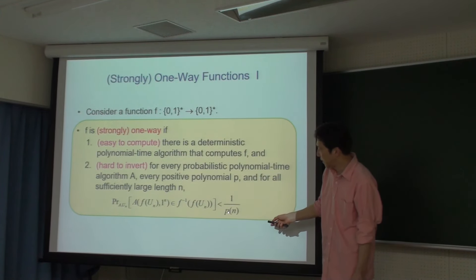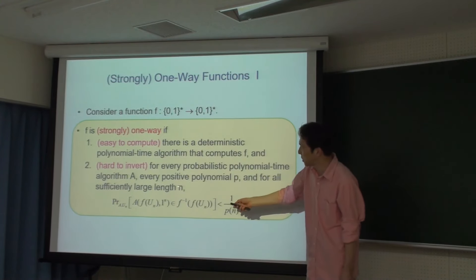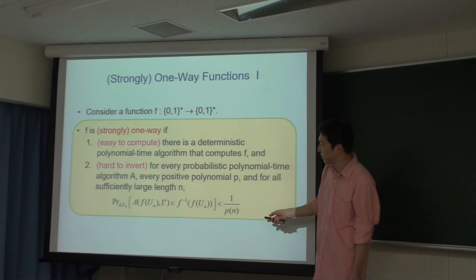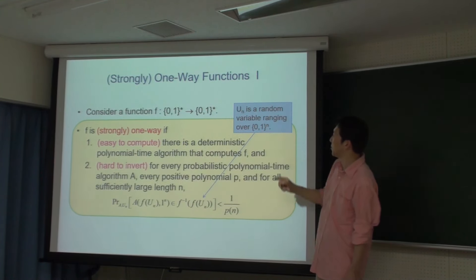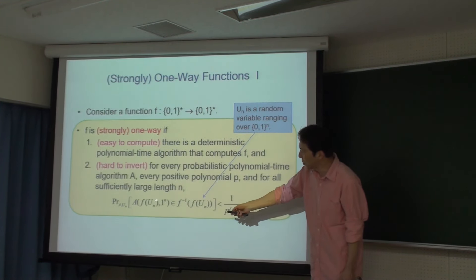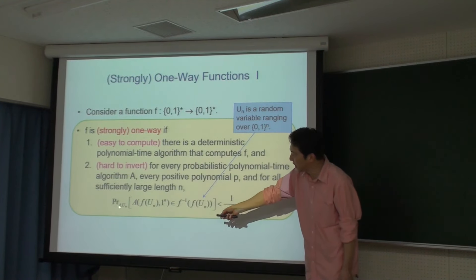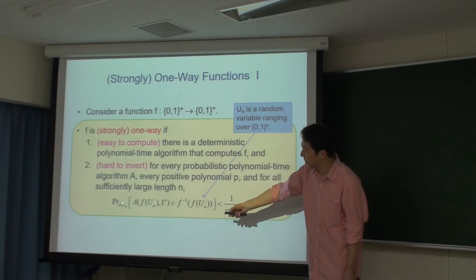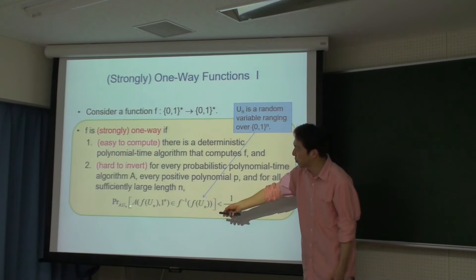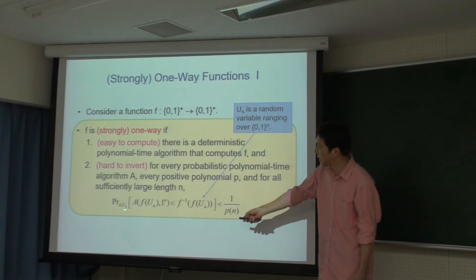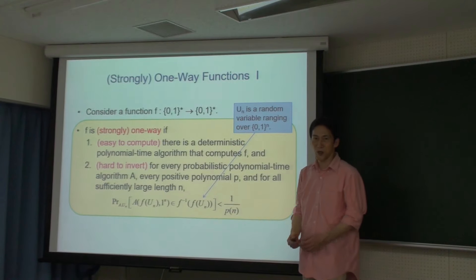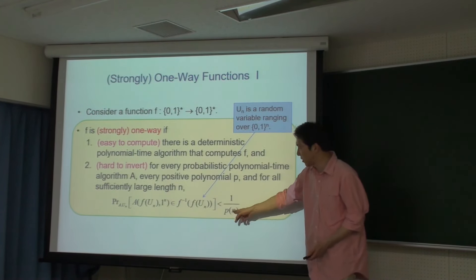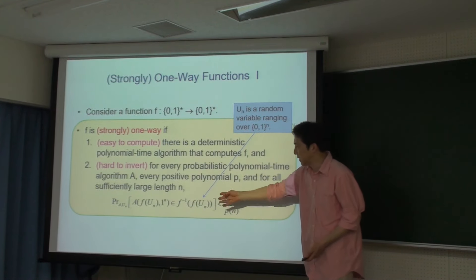ワンウェイファンクションの定義として、まず決定性の多項式時間アルゴリズムでFを計算できます。ただしFの値から元の値を見つけることの成功確率が、どんな多項式P(N)に対しても1/P(N)より小さい。入力の長さNのユニフォームランダムな入力に対して、確率アルゴリズムAを走らせてF(x)のインバースを計算できる確率がどんな多項式より小さいということです。